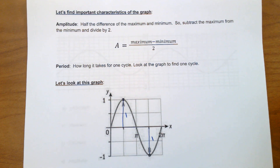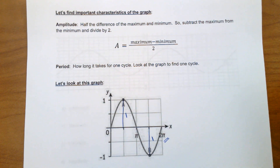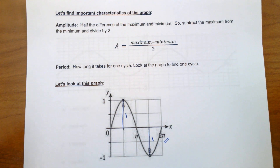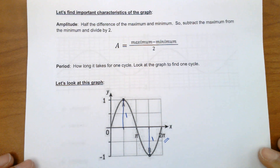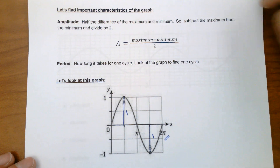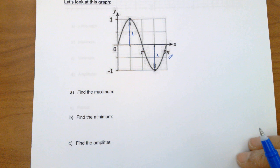The period, which we just talked about, is how long one cycle takes. For this standard curve, it's two pi. We can determine these characteristics from the graph, and also from the equation — we'll get to that a little bit later. But let's look at this graph and write down a couple of the characteristics.